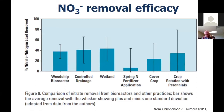Looking at removal efficacy of the wood chip bioreactors compared to other practices: on the left, percent nitrate nitrogen load removed — the wood chip bioreactor shows just under 40%, similar to controlled drainage and constructed wetlands. In fact, none of these practices are above 50%. So no free lunch here — these are all helpful, but there's no silver bullet.